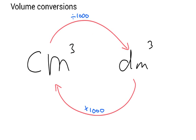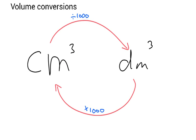Annoyingly, lots of problems come in centimetres cubed — you'll be given the volume of a solution in centimetres cubed. But for our equations, centimetres cubed is no good; we're going to need decimetres cubed. So to go from centimetres cubed to decimetres cubed, you divide by a thousand. We'll see examples of this shortly. If you need to go back, from decimetres cubed to centimetres cubed, you multiply by a thousand. Just be aware of volume conversions.